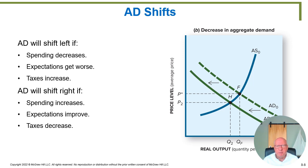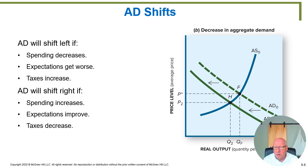Other factors could also cause the aggregate demand curve to shift left: expectations of the future getting worse, or taxes increasing so people have less money to spend. Conversely, if we were already below full employment, anything that causes spending to increase, expectations to improve, or taxes to decrease will get people to spend more. That will cause firms to hire new workers selling the extra goods being purchased, until eventually so many workers are hired that we reach the full employment level of output.